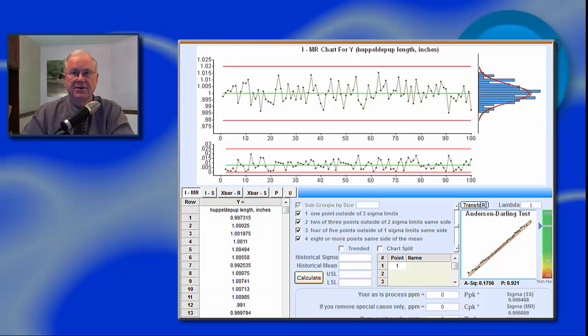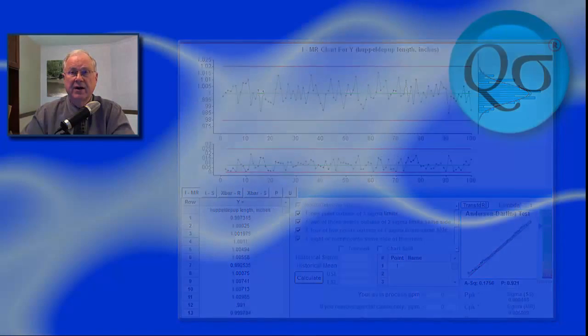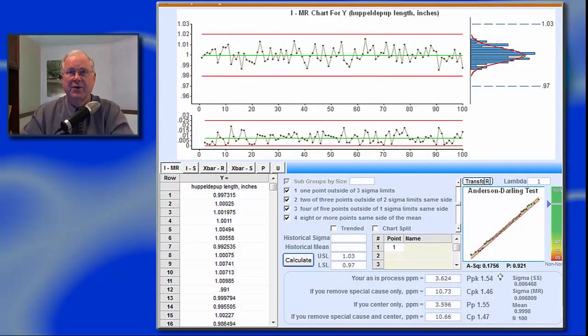Knowing that the process is probably stable and predictable lets us predict that future performance will be like past performance, but it does not give us information about whether that performance will be satisfactory. After all, a process can be reliably bad.